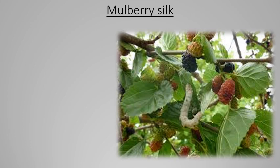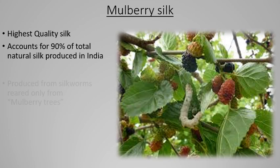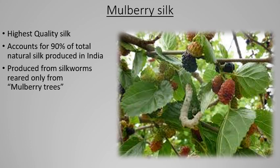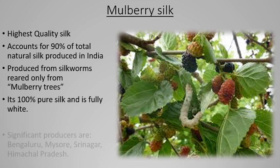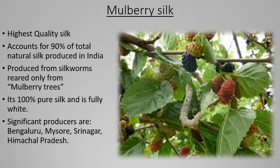Mulberry silk is considered one of the best varieties. Silkworms feed on mulberry tree leaves and it is the highest quality silk, accounting for 90% of natural silk produced in India. Pure mulberry silk is only white. Significant producers include Bangalore, Mysore, Srinagar, and Himachal Pradesh. Karnataka produces 70% of the country's mulberry silk, with best climate for rearing silkworms and huge power looms. West Bengal also produces good mulberry variety.